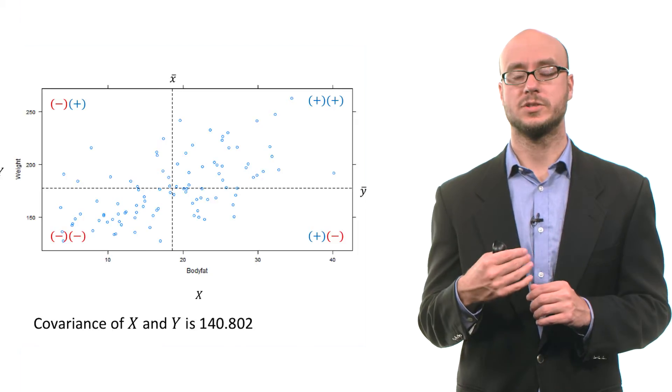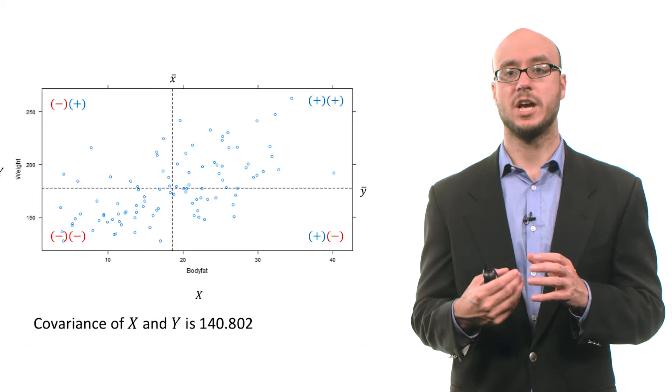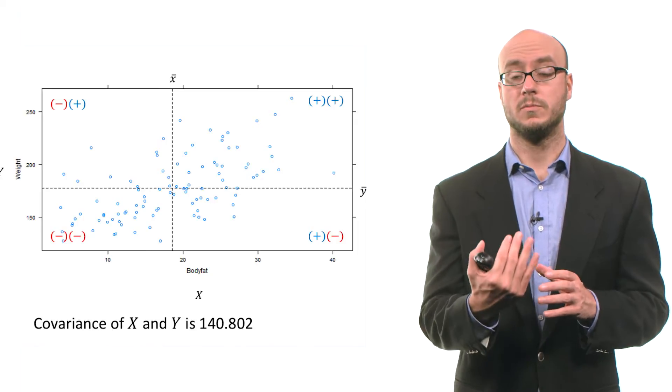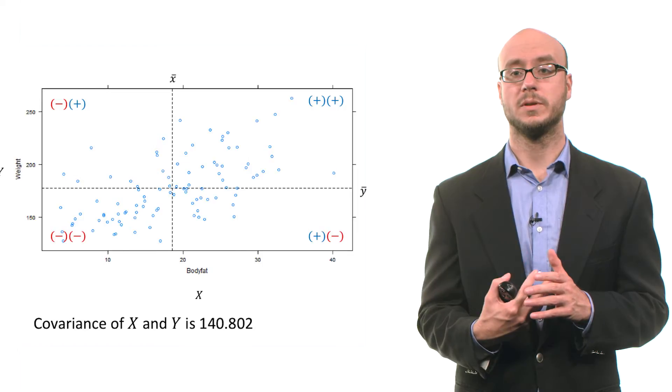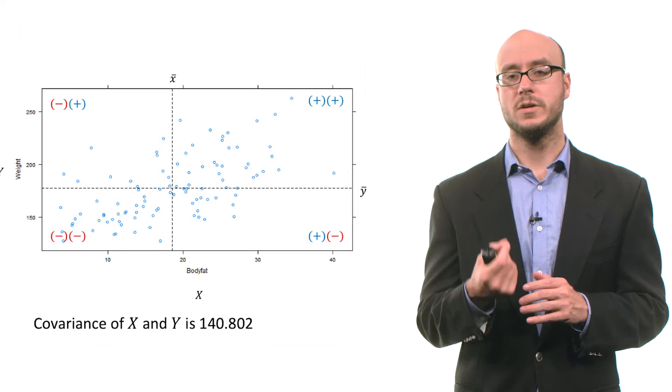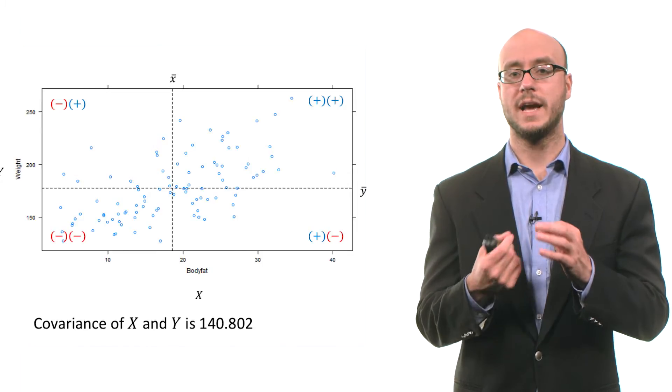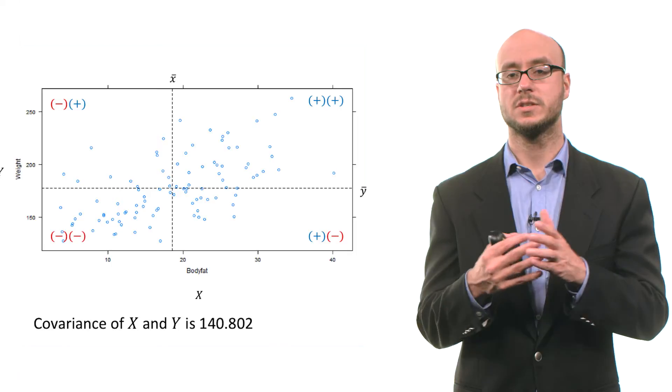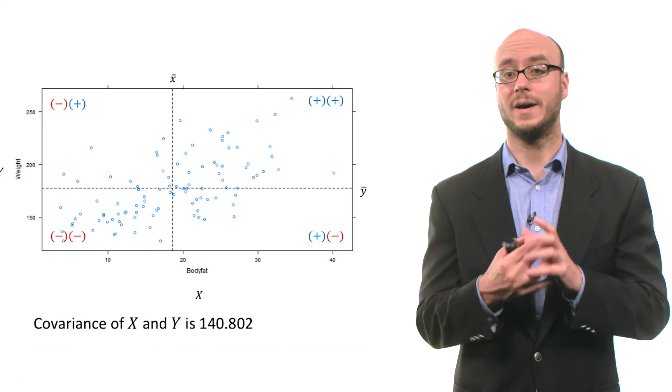In the lower left-hand quadrant, you have data points that in general are below the mean of x and below the mean of y. Those data points have two negative deviations, but when you multiply those, we get positive cross products. That positive linear relationship is a function of the fact that we have more data points in the upper right and in the lower left, so when we calculate covariance, we get this positive measure.